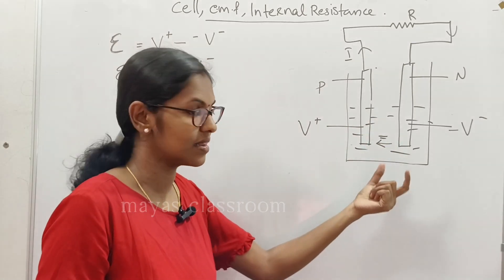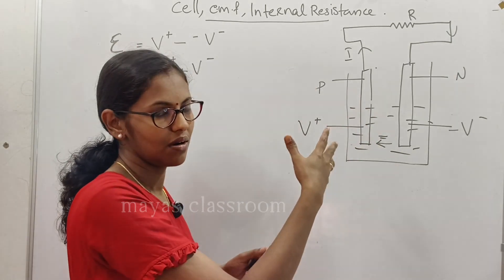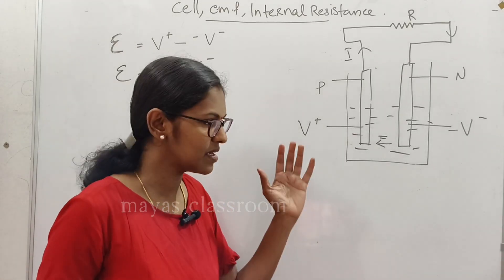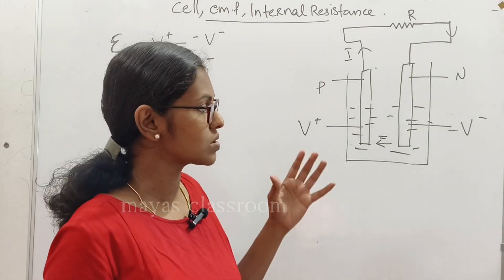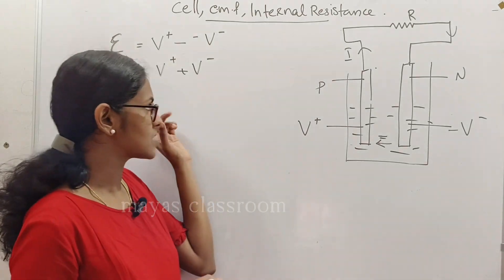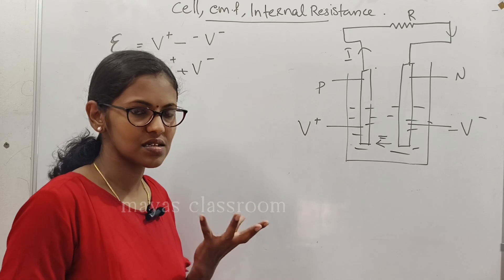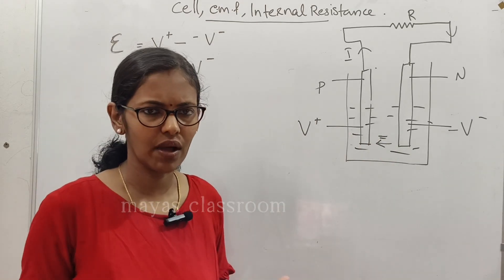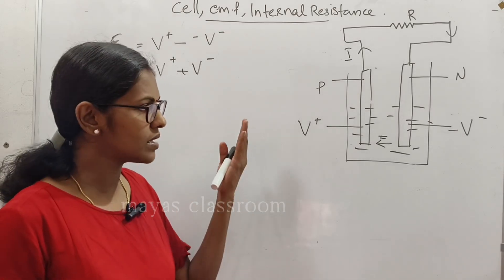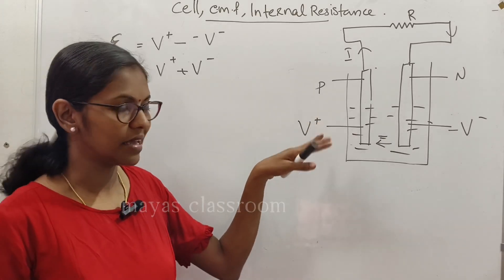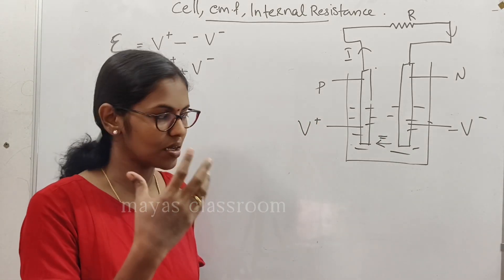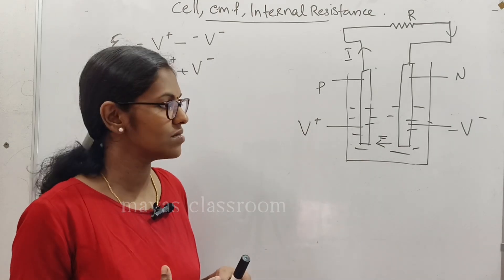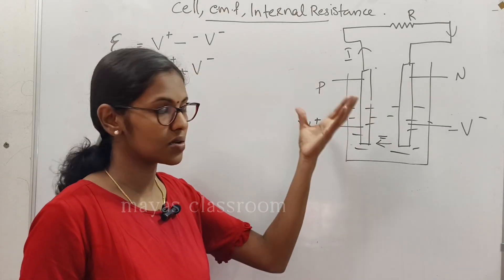The resistance inside the cell when the current flows through it is called the internal resistance of the cell. This internal resistance is represented by small letter r. The cell has both internal resistance r and external resistance R.